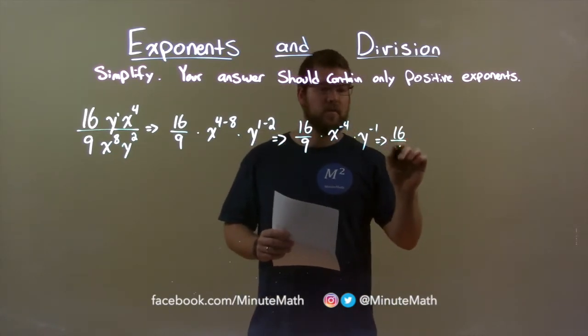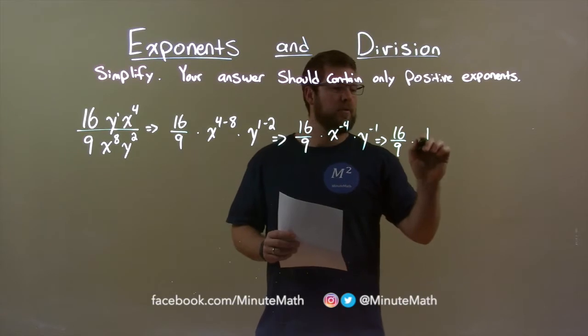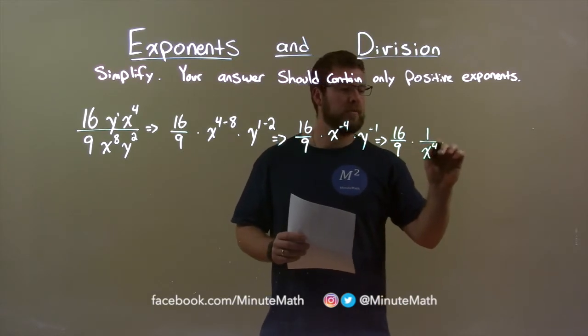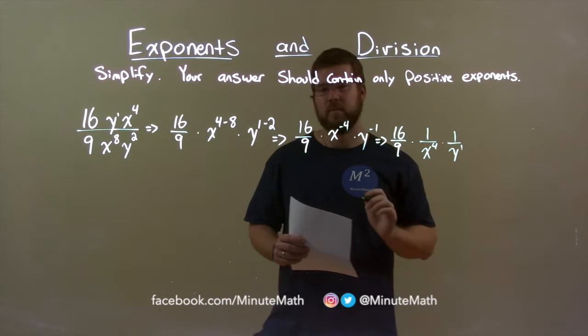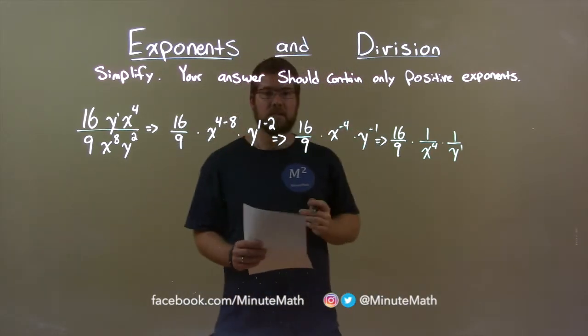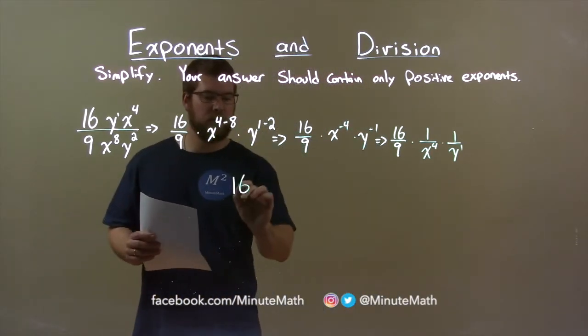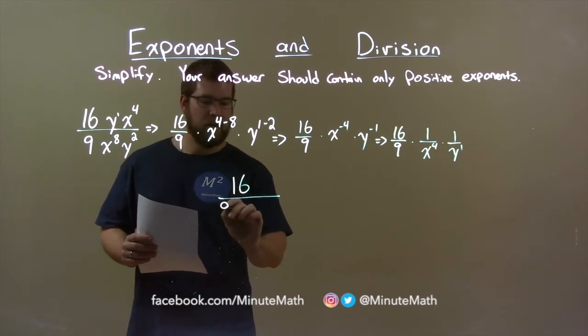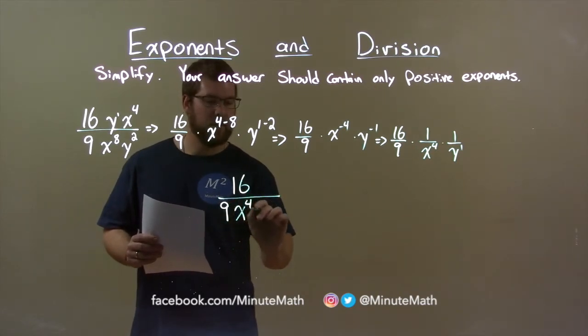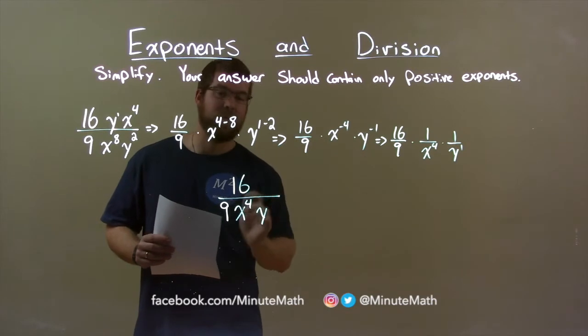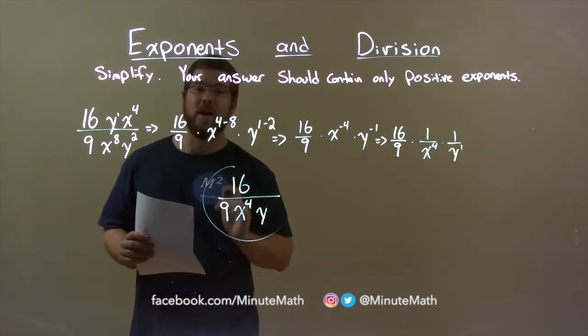So again, 16 over 9 here, but now we have 1 over x to the 4th times 1 over y to the 1st power. We can combine that to write our final answer: 16 over 9x to the 4th power times y. And remember we don't write that exponent of 1. And there we have it.